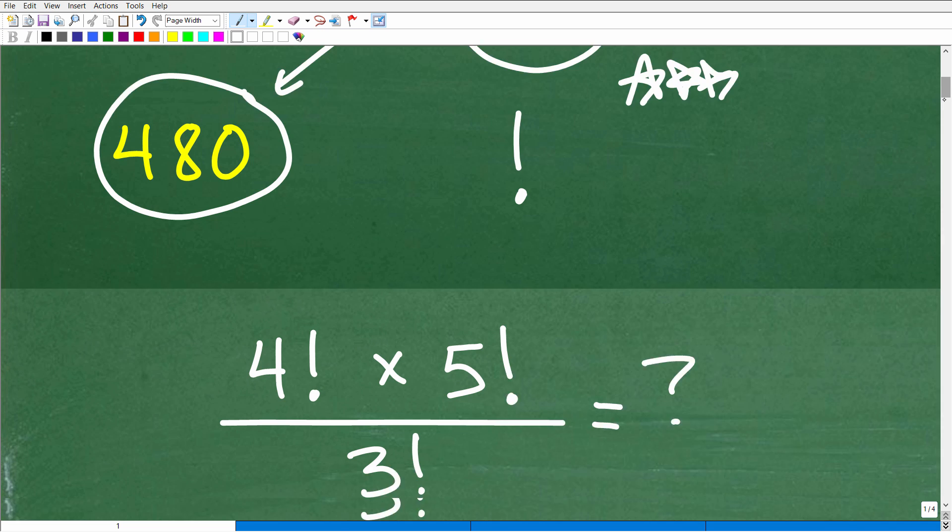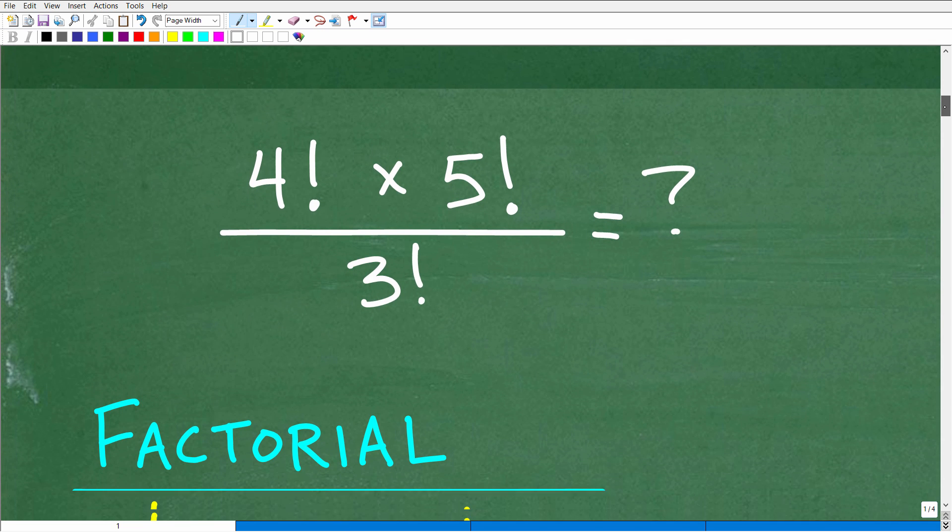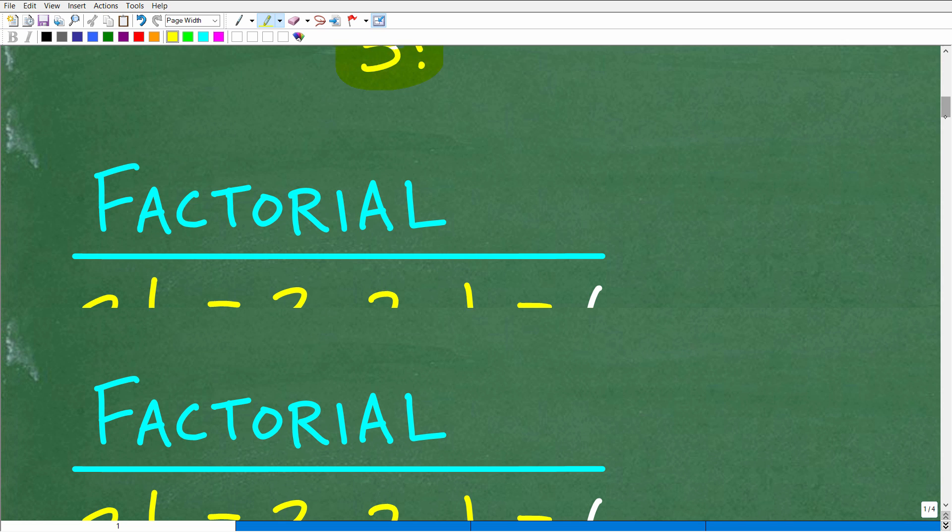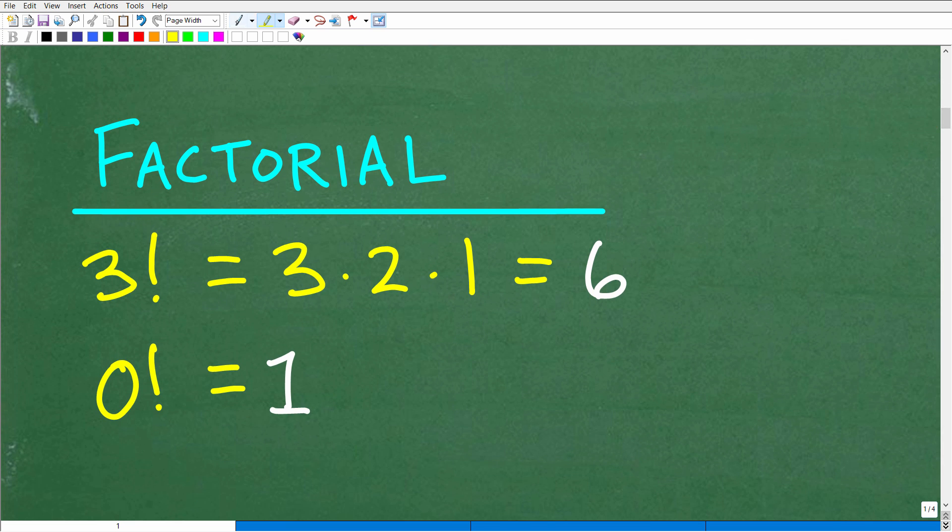So let's go ahead and get into the problem. Here's the question we have. The way we would state this problem is four factorial times five factorial, all divided by three factorial. So what is factorial? Well, this is super easy.